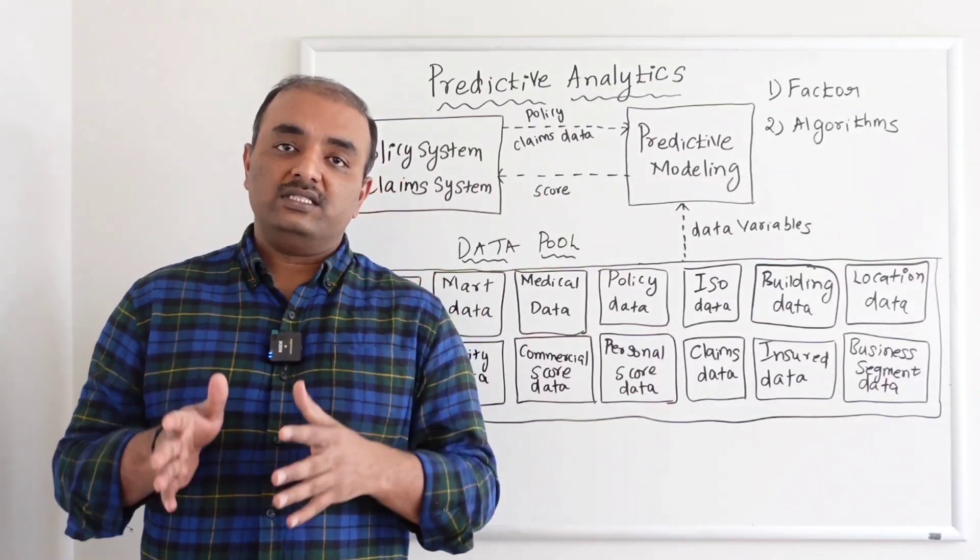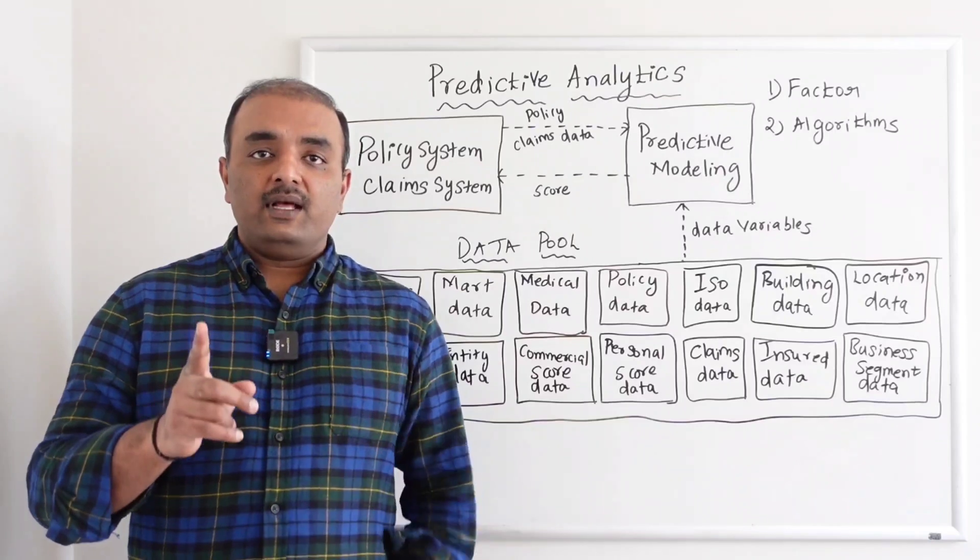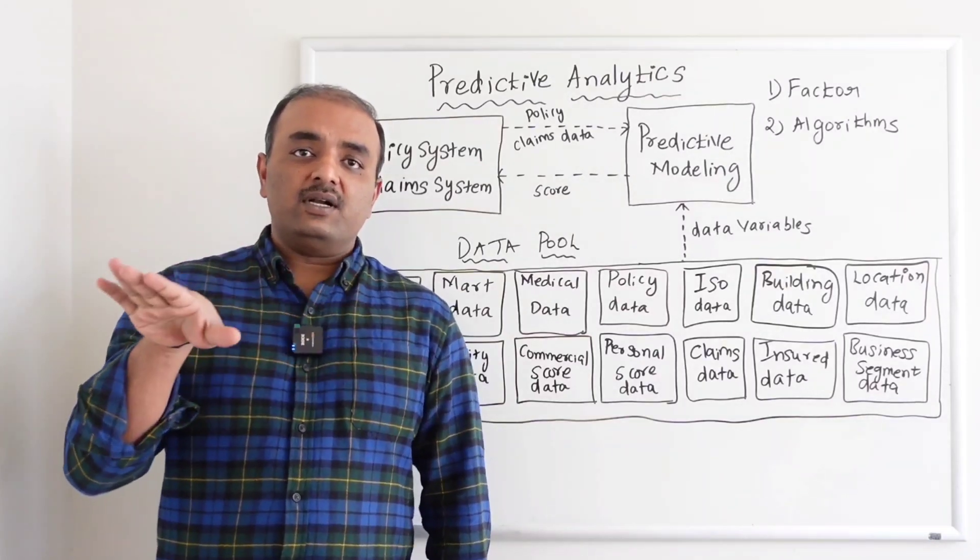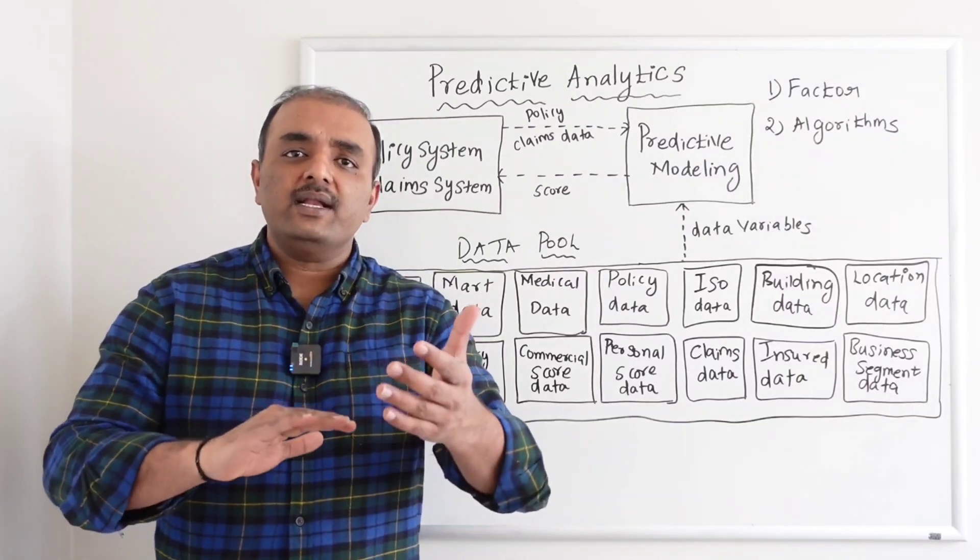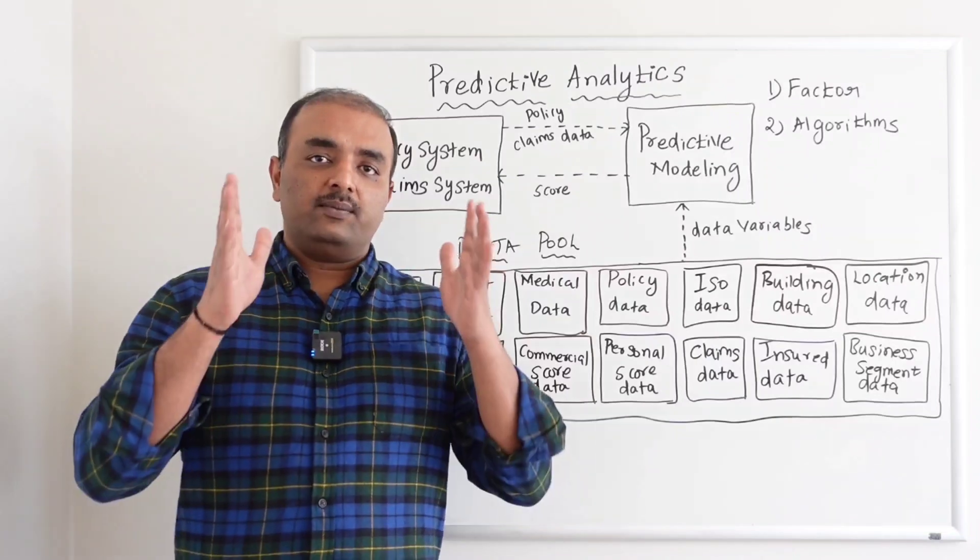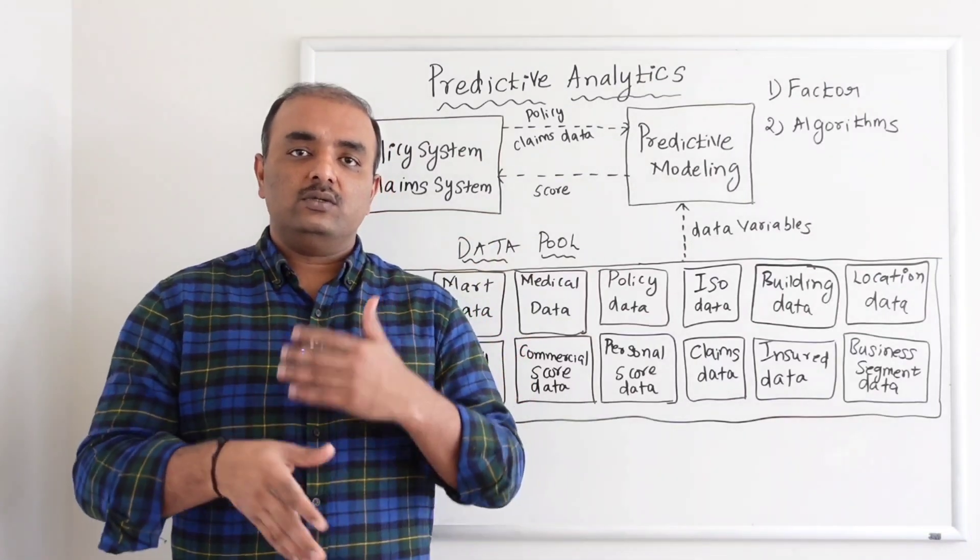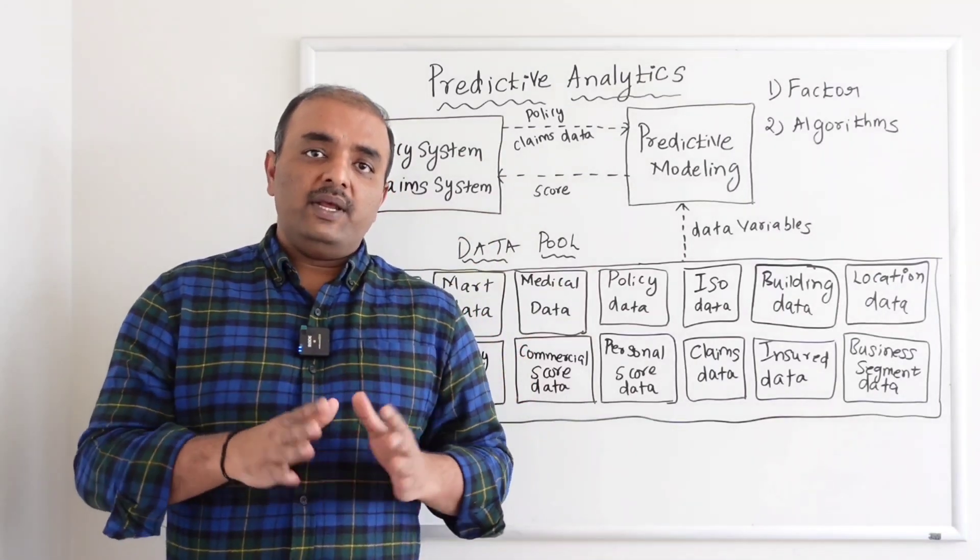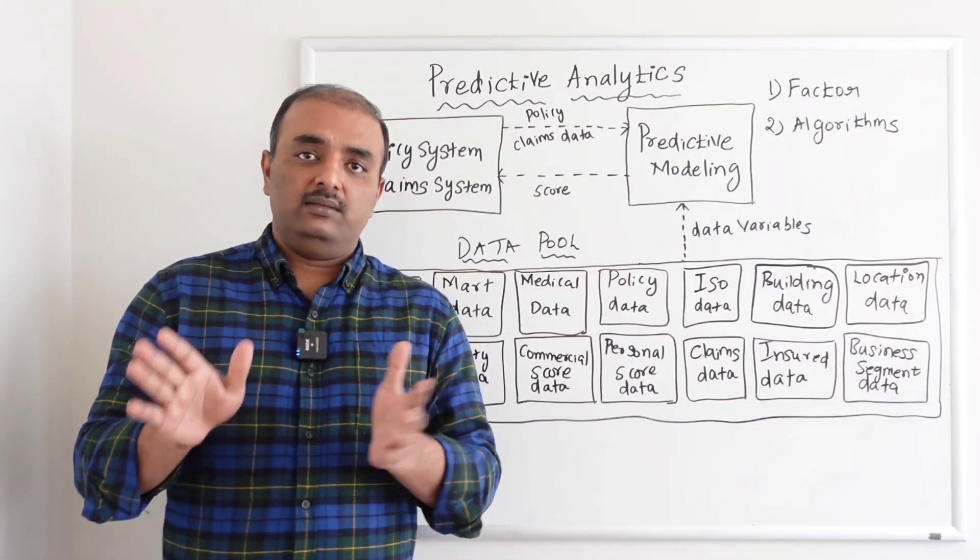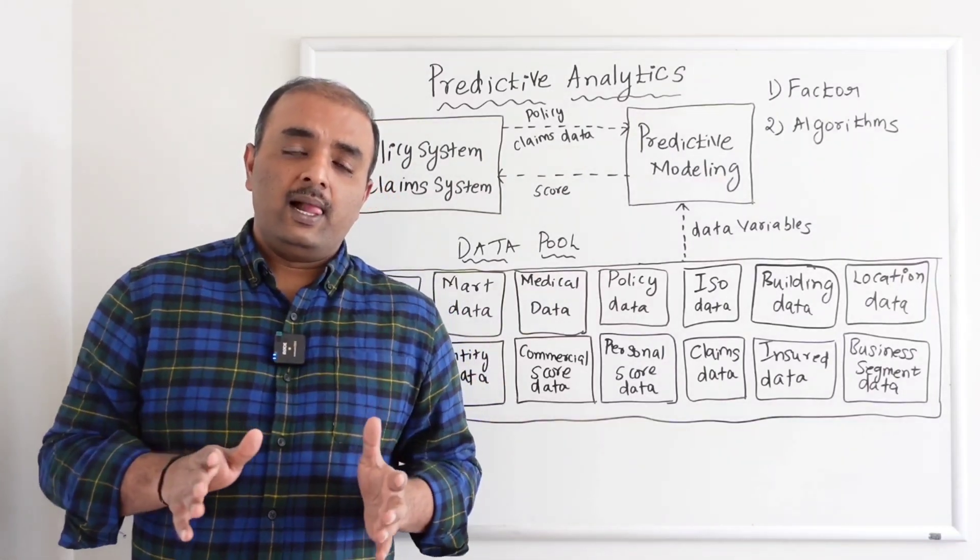That's the reason why they have three to four models. And then at a time we can have only one model which will be there in production, but other three models will be a kind of - we call it as champion versus challenger model. Champion is the one which will be there in the production, which will be used to derive the score. Meanwhile, behind the scenes, these challenger models will be keep on scoring based on the different attributes.